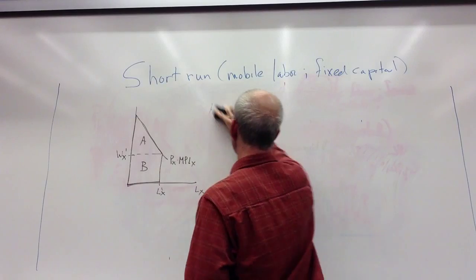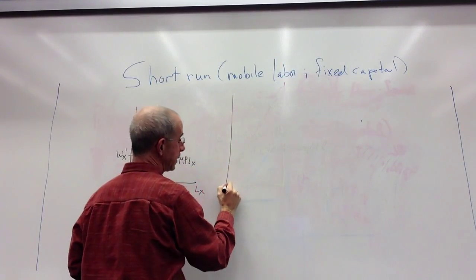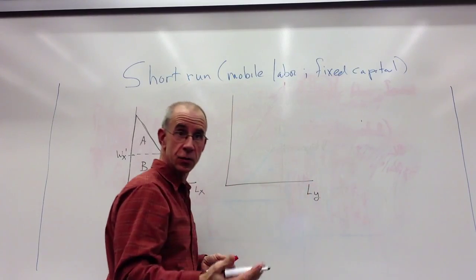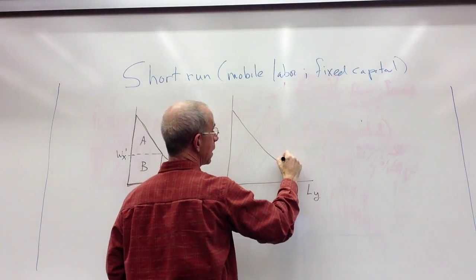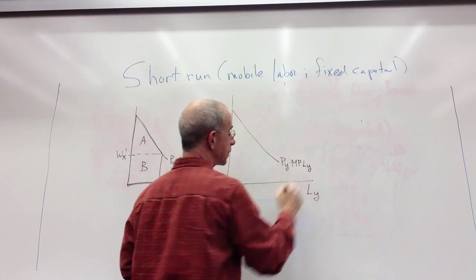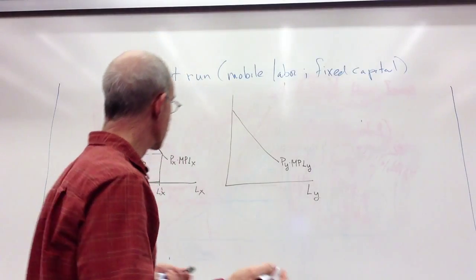Now I want to bring in a second industry. This is industry Y, and here I've got the price of Y multiplied times the marginal productivity of labor in Y. Same exact story.